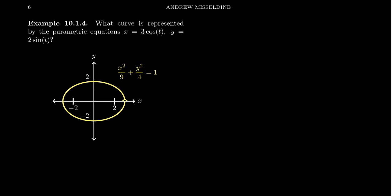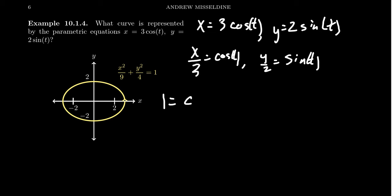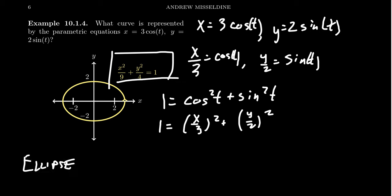Let's look at another example to get an idea about stretching and scaling. If we take x equals 3 cosine of t and y equals 2 sine of t — we switched it up and put a 2 instead of a 3. Solving for cosine gives x over 3 equals cosine of t, and solving for sine gives y over 2 equals sine of t. Using the Pythagorean relationship, 1 equals (x over 3) squared plus (y over 2) squared, giving us x squared over 9 plus y squared over 4 equals 1. This gives us an ellipse.